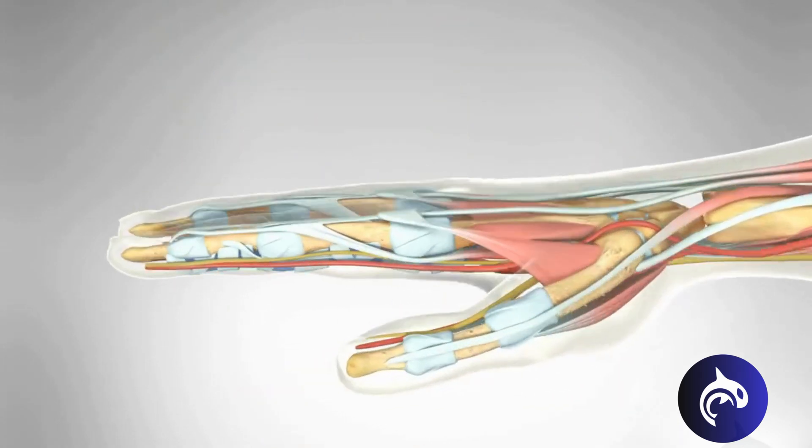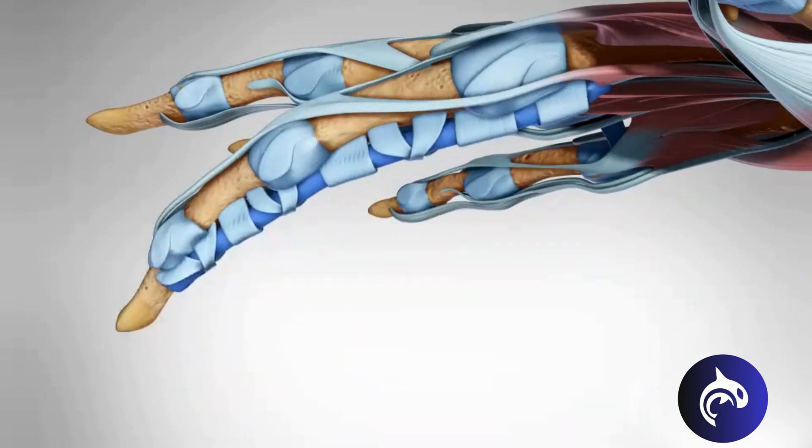In a healthy finger, tendons glide smoothly through a sheath as the finger bends and straightens.